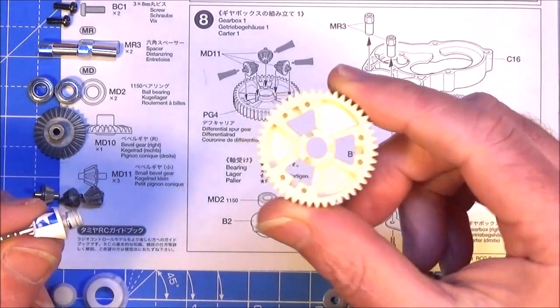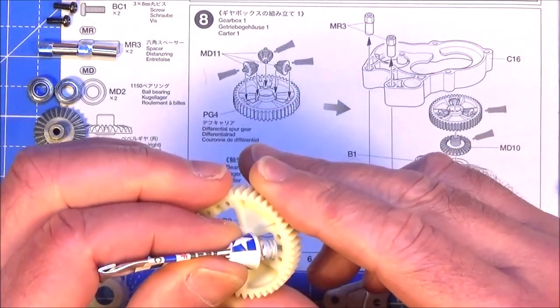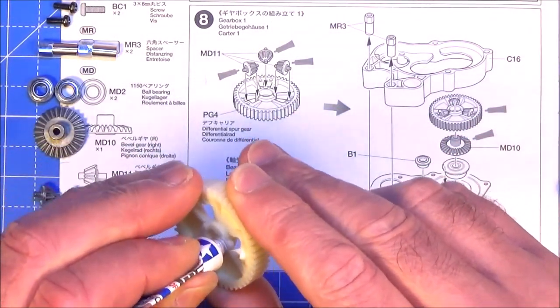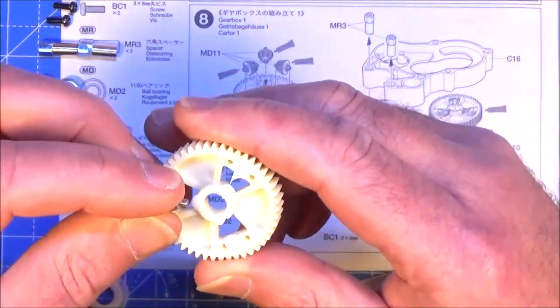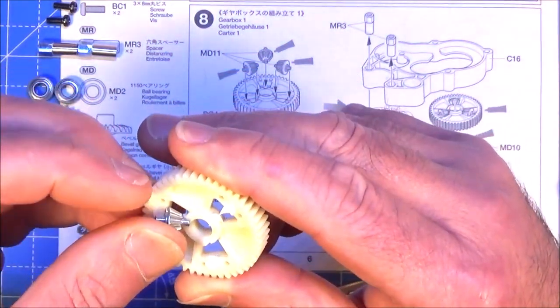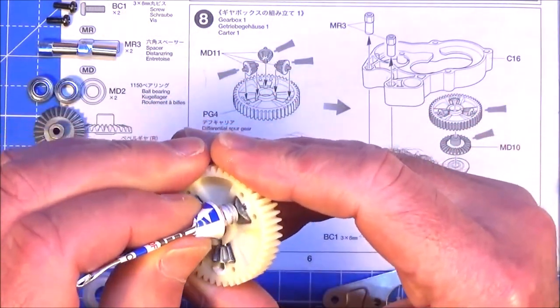So it's as simple as that so straight on to the gearbox which is step 8. The first thing we need to do is make up the diff so just put a bit of grease into these slots and then just pop your small bevel gears into those slots and just give those a bit of a grease up.